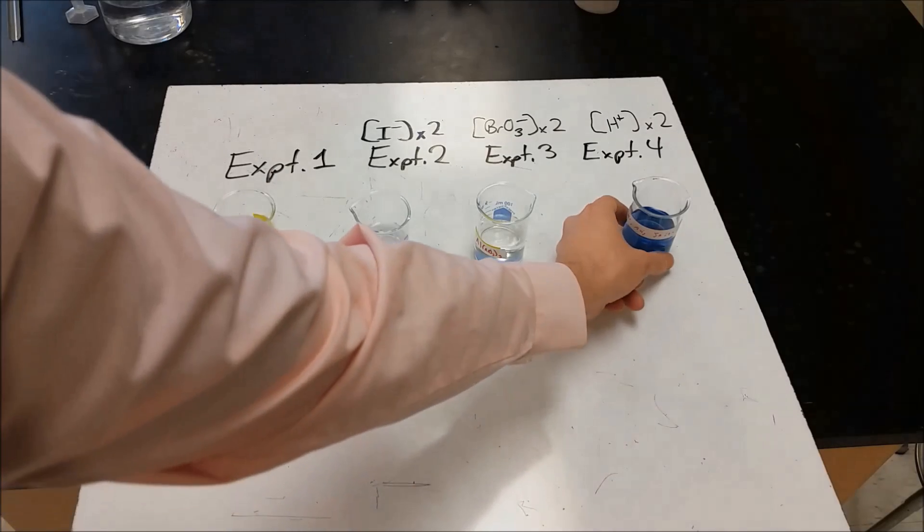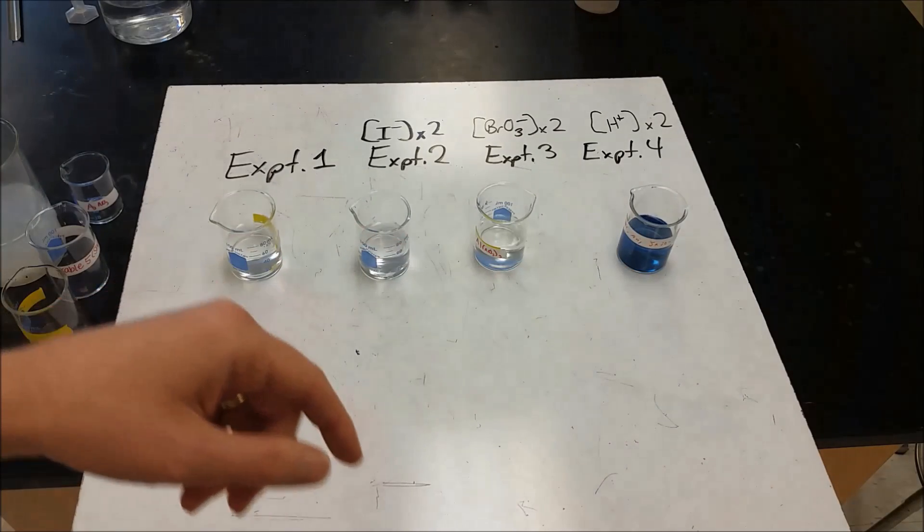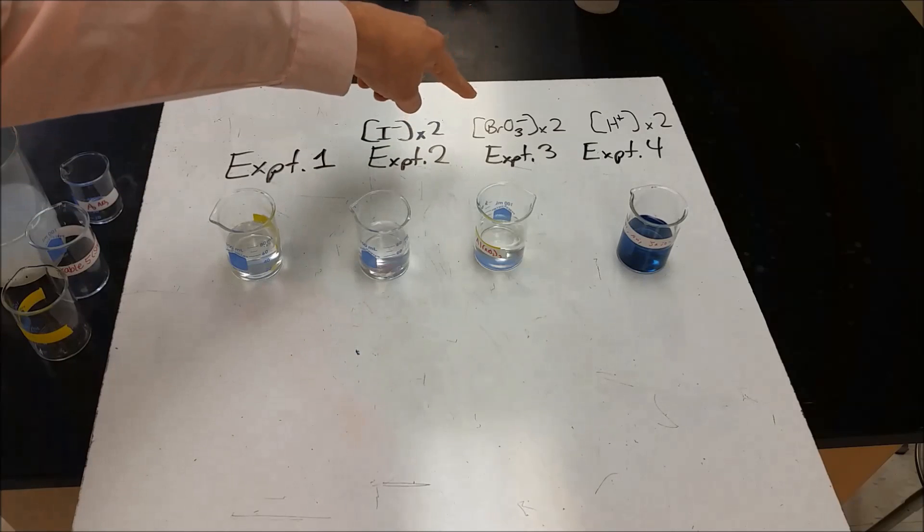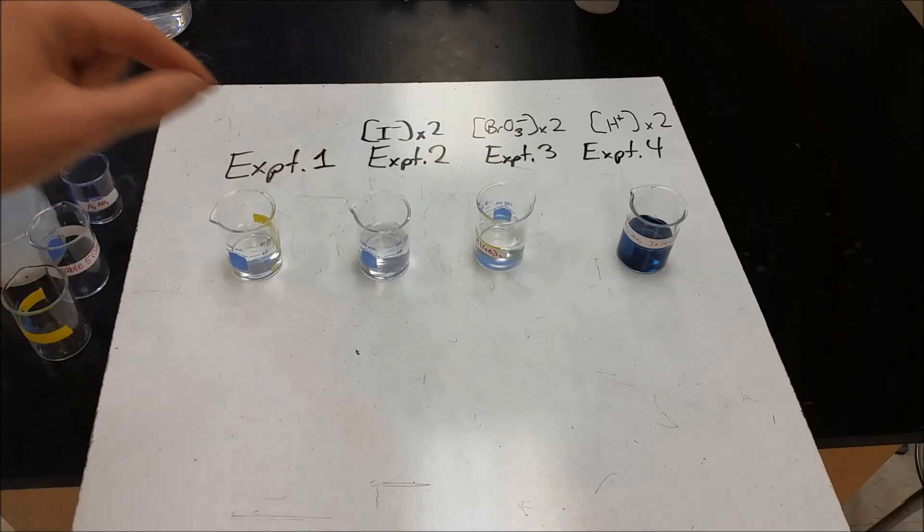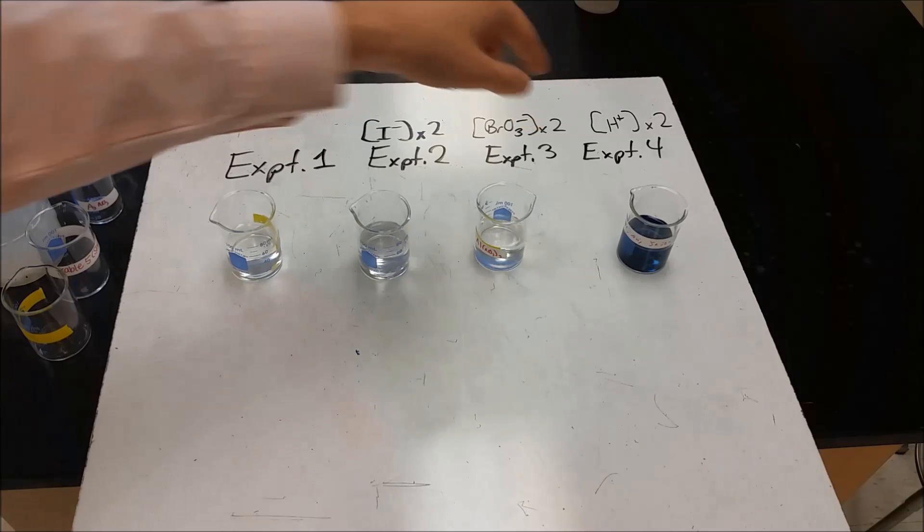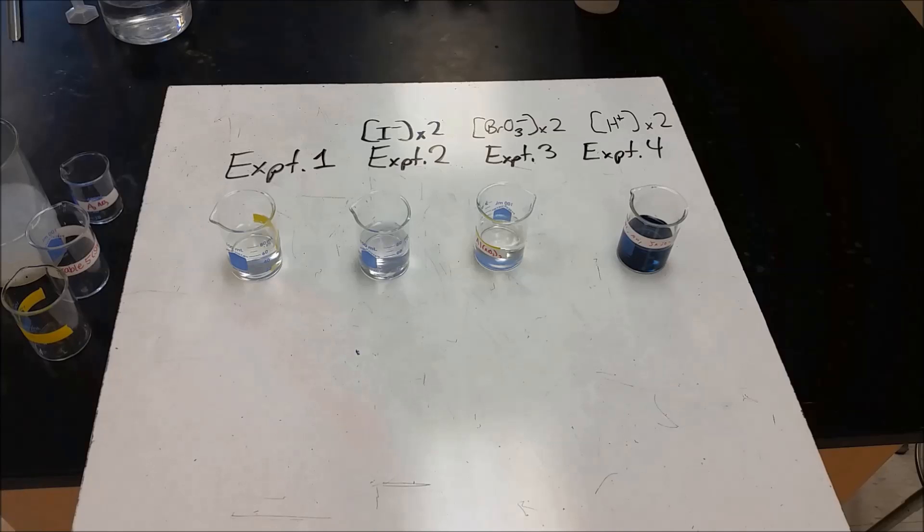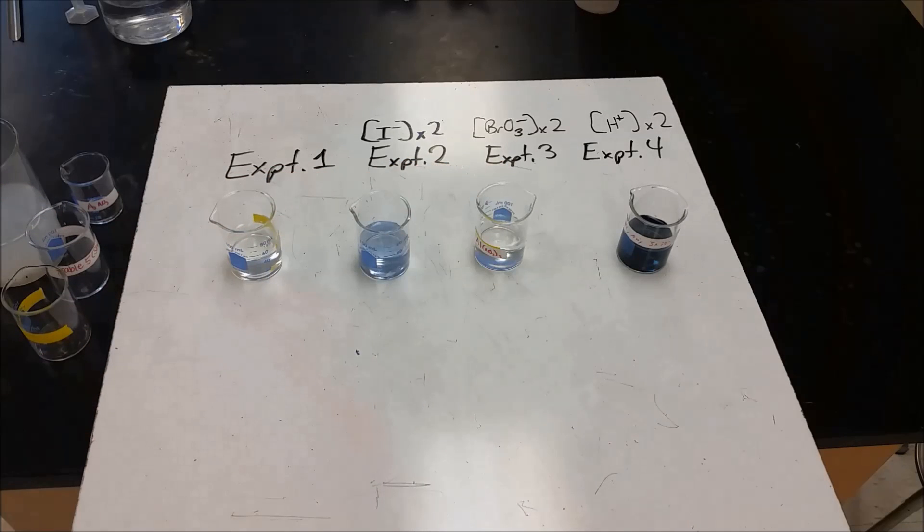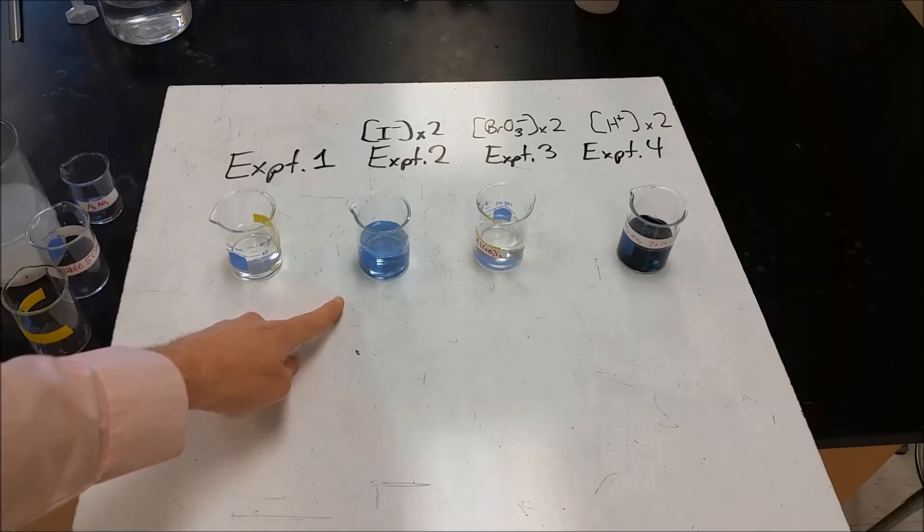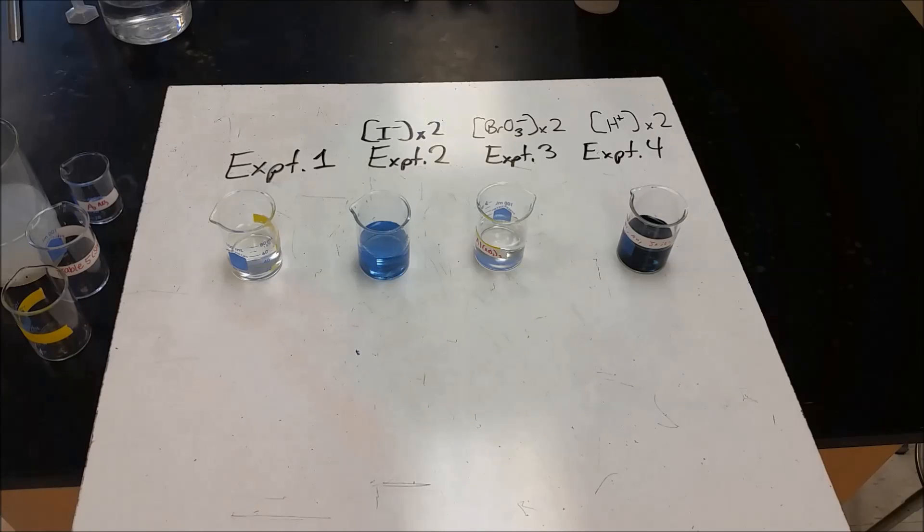And we can see our first experiment here has turned to blue, or our fourth experiment. In our third experiment, we did 10 milliliters of everything, but we dropped the water out and added double the amount of bromate. And then in our fourth experiment, we did the water gone again, but this time we took the H plus and doubled that. And we're just going to blue here, it looks like. And blue here.